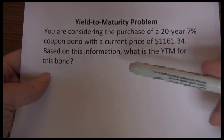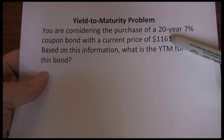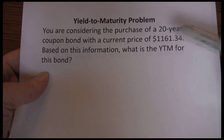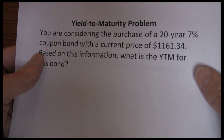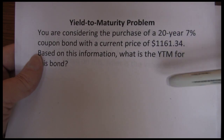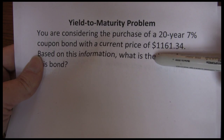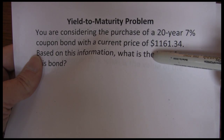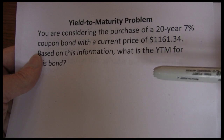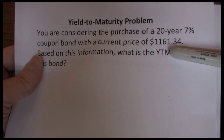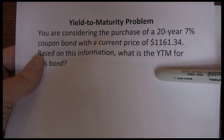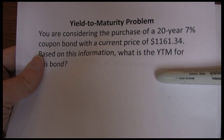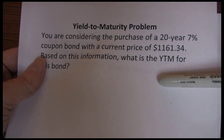In this example, we're considering the purchase of a 20-year bond. It's got 20 years to maturity, a 7% coupon, so we're going to receive $70 a year, or $35 every six months in coupon payments. The price of that bond — what it's going to cost us today to purchase it — is $1,061.34. If we spend $1,161.34 today, receive $35 every six months for the next 20 years, and then $1,000 at the end of the 20 years, what rate of return are we going to earn on that investment?